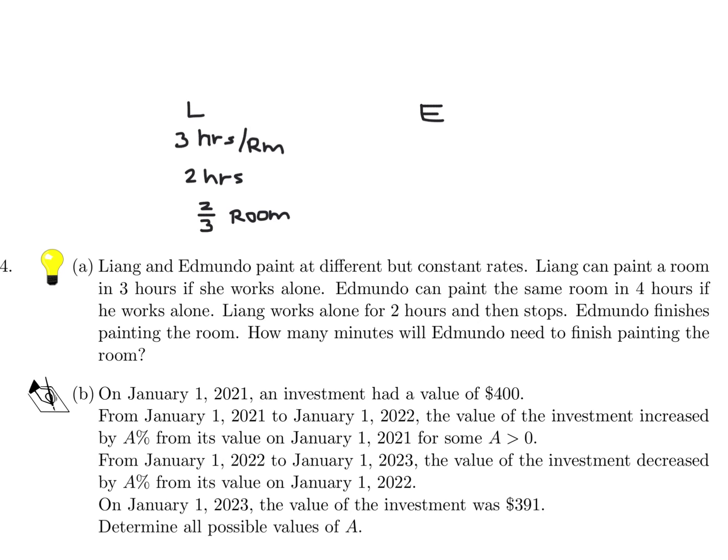Well, Liang, three hours to paint the room. So in two hours, I guess she would paint two-thirds of the room. Edmundo is taking four hours to paint the room. Liang works alone two hours and then stops. Edmundo finishes painting the room. So Edmundo is getting one-third of the room to finish. He finishes the room in four hours normally. To finish only one-third, he would need 4/3 hours. They want in terms of minutes, that's one hour and a third of an hour, which is 80 minutes.